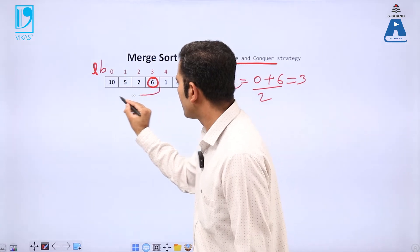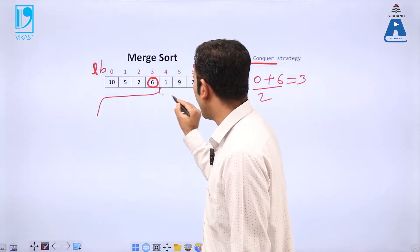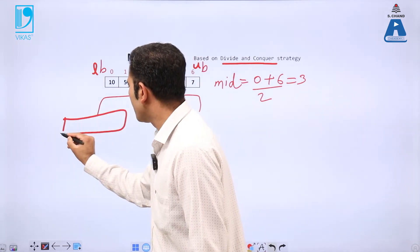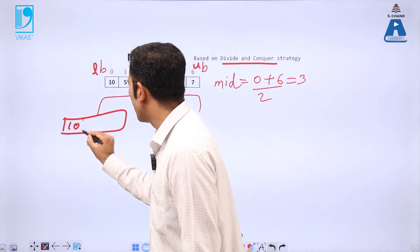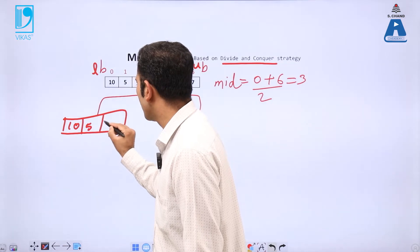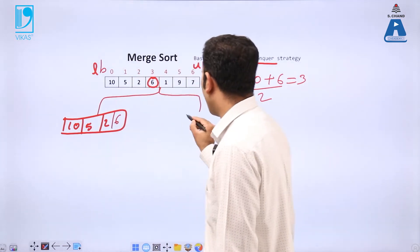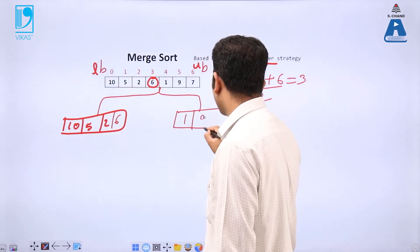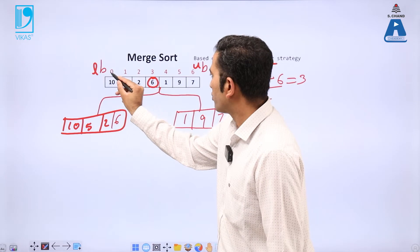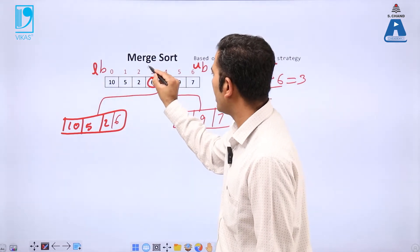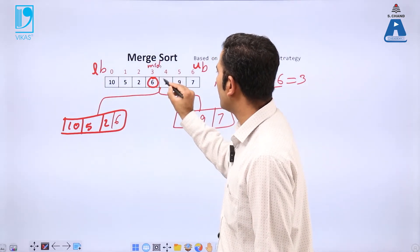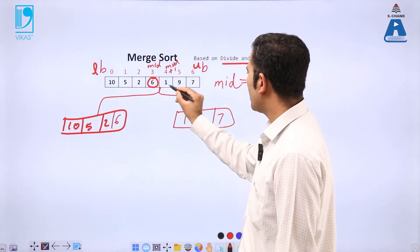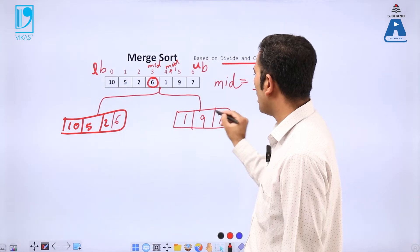After dividing at the midpoint, we get two arrays. The first array contains elements 10, 5, 2, and 6 — from index 0 to mid. The second array contains elements 1, 9, 7 — from mid+1 to the upper bound.